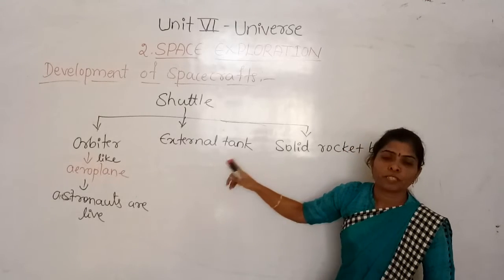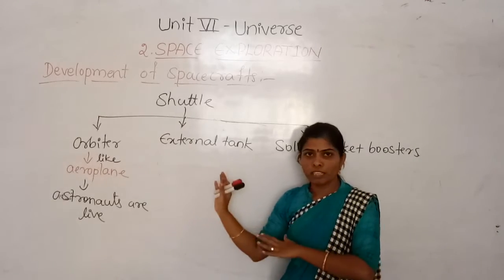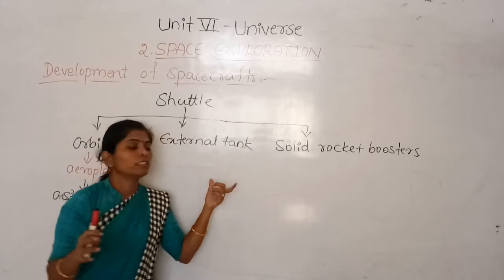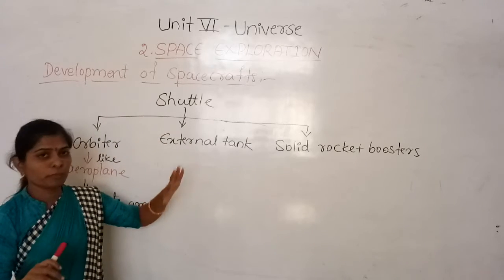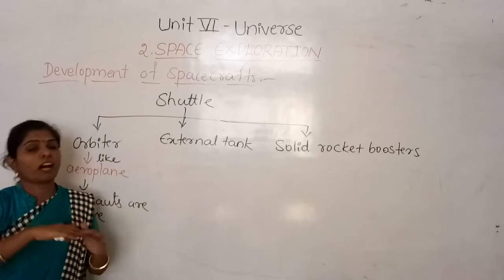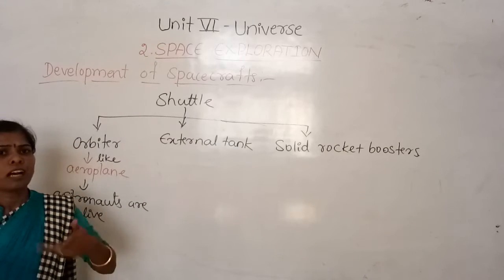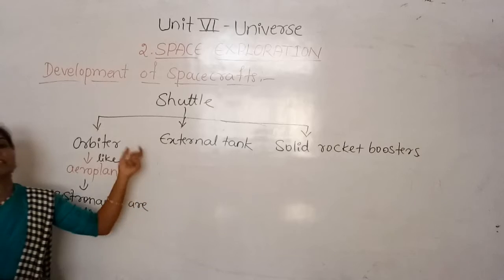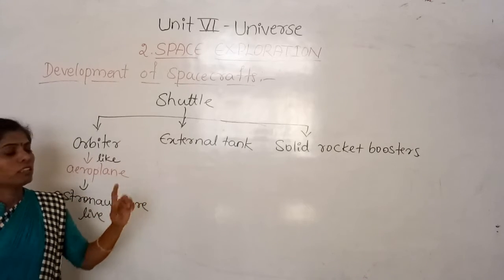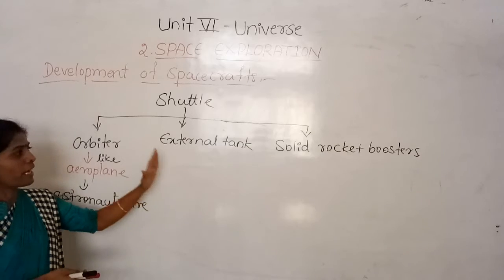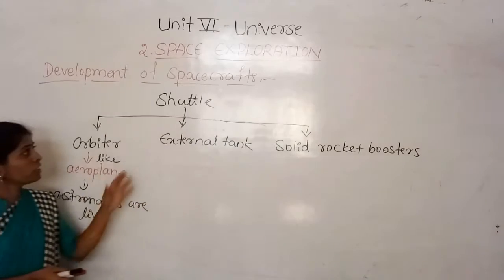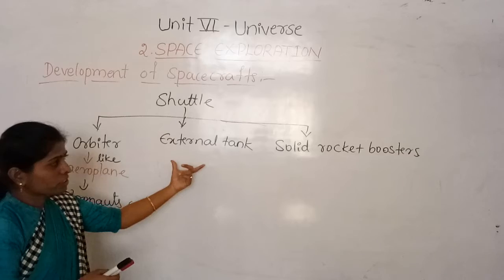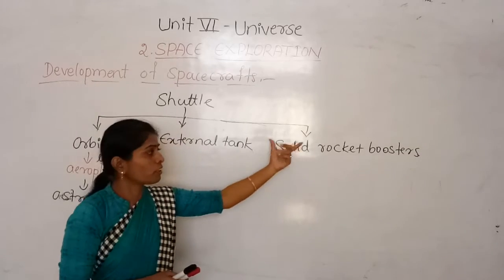The external tank also has fuel in it. This external tank will be detached when all the fuel in it has been used up. After crossing the gravitational force of the earth, more fuel is still needed, and that will be there in the external tank. When all the fuel is used up from this external tank, it separates. So the shuttle has three parts: the orbiter, the external tank, and the solid rocket boosters.